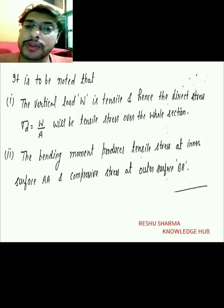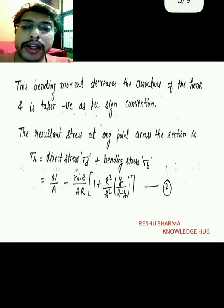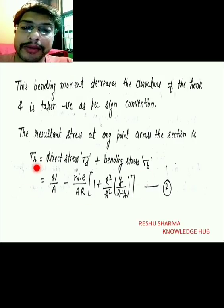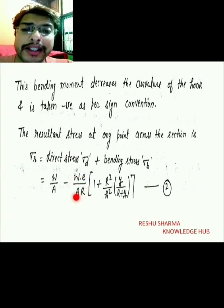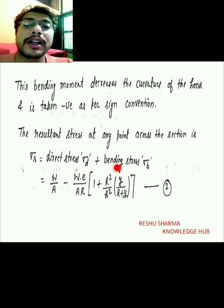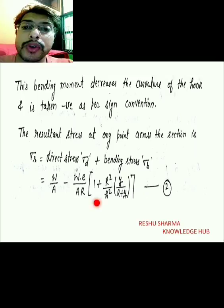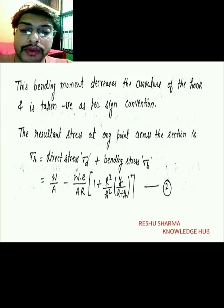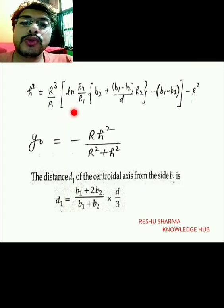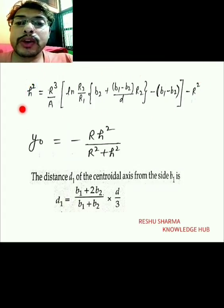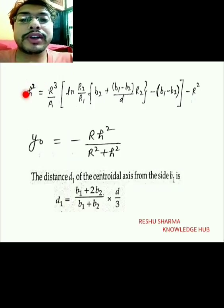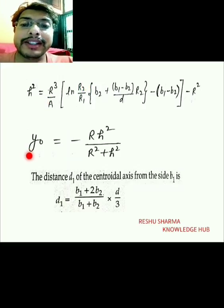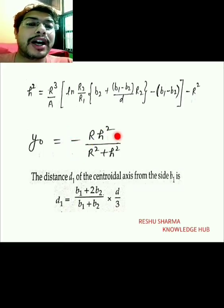For solving problems of a crane hook, you are required to remember this formula: sigma_r equals direct stress W/A plus the bending stress — this is equation A. As already mentioned, in every problem of bending of curved bars you require the link radius h². For the trapezoidal cross-section, y-naught is the distance of the neutral axis from the centroidal axis.